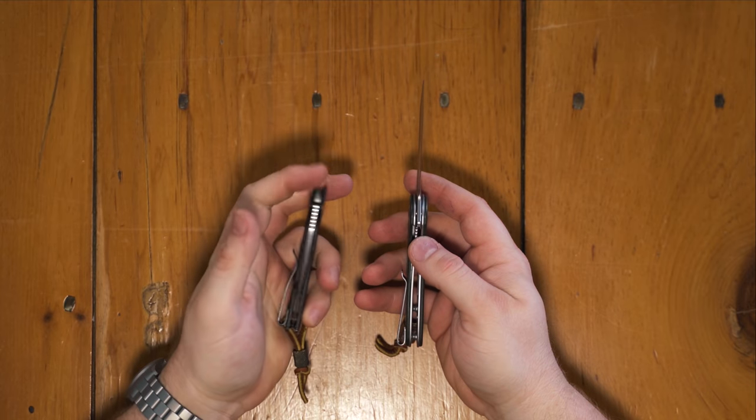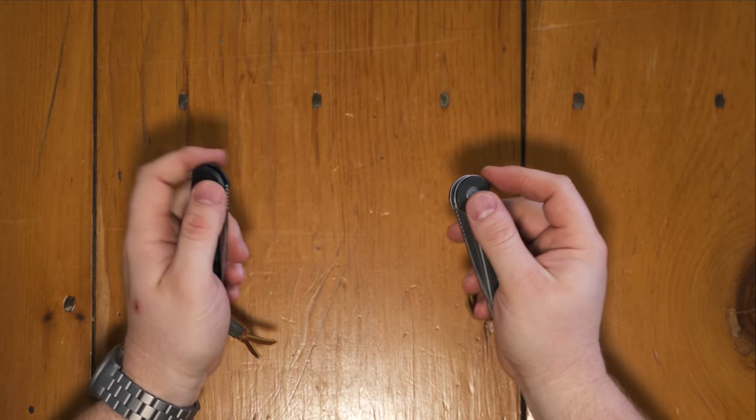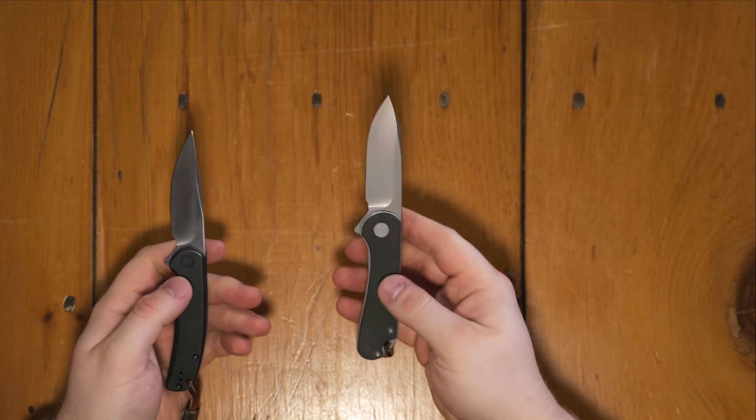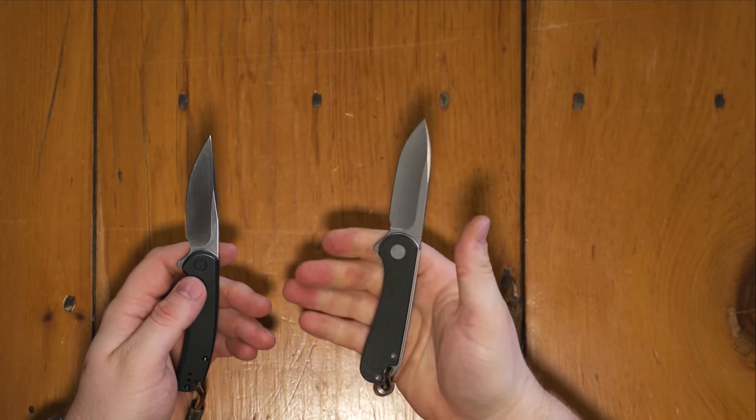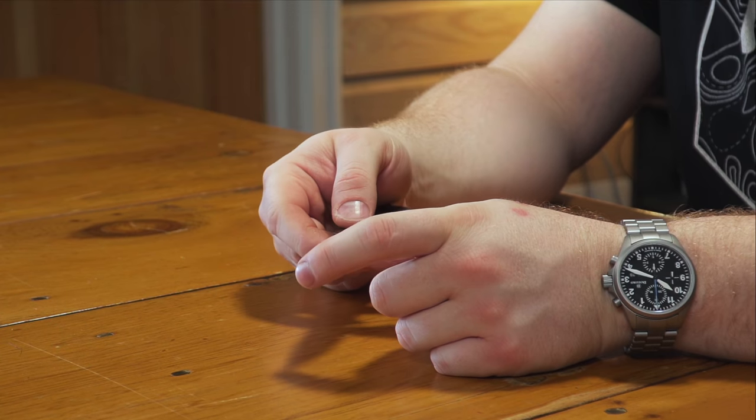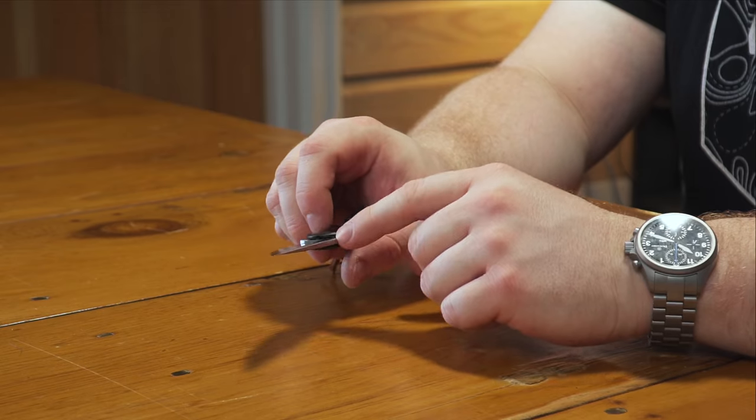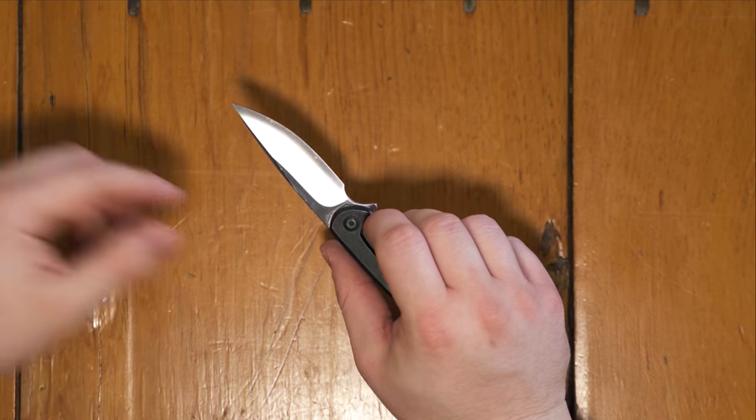The other major difference is that this one is the first Civivi frame lock instead of a liner lock. Other than that, they're very similar. But the problem that a lot of people have with the Elementum is its size. A lot of people feel like it's a little small, it does have a slightly smaller blade than the Elementum. With a 2.75 inch blade, you've got a drop point hollow grind, so all the same stuff there.